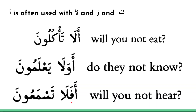Similarly, fa can mean 'so.' So fala tasma'un means 'so you do not hear,' and afala tasma'un means 'do you not hear?' or 'will you not hear?' You can see how the alif prefix can be combined with la, wa, or fa — or even with multiple prefixes together — to make these compound words.